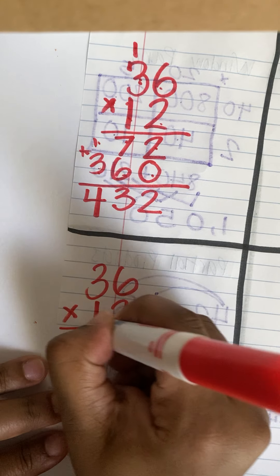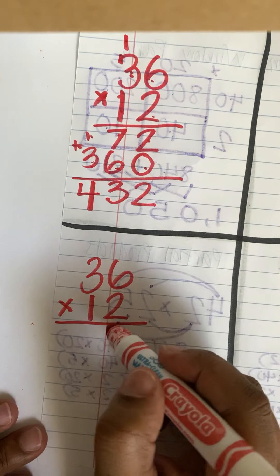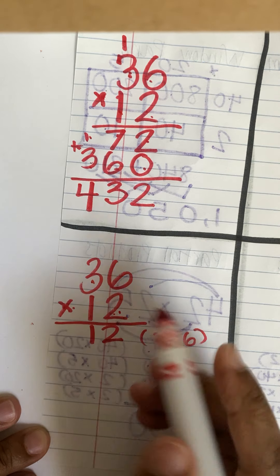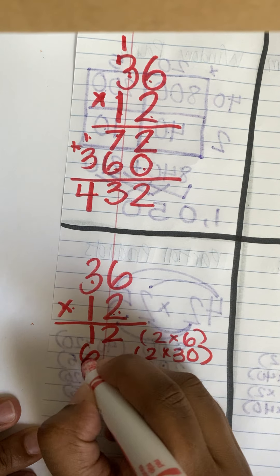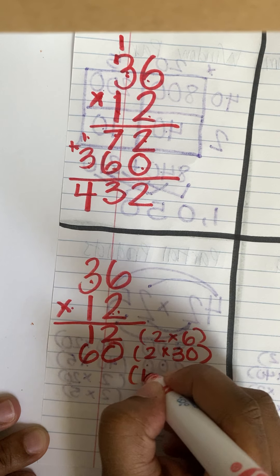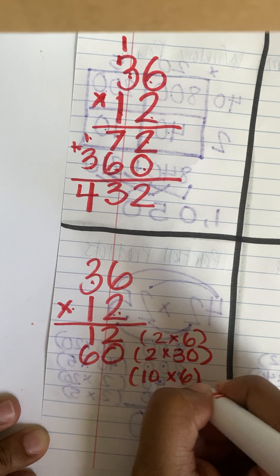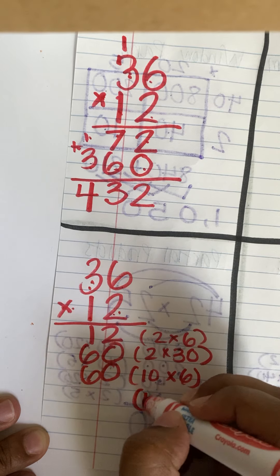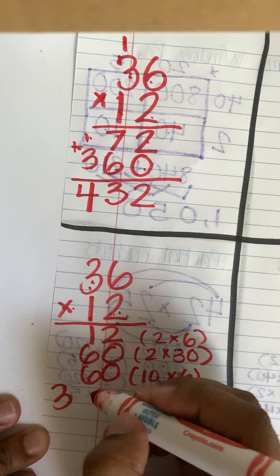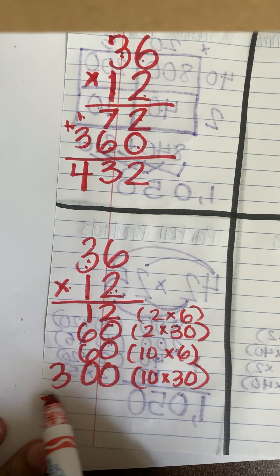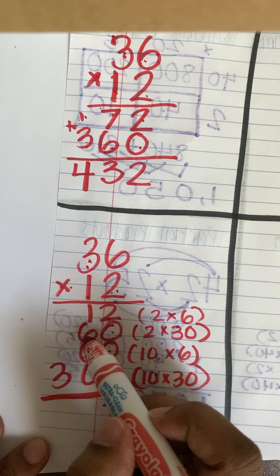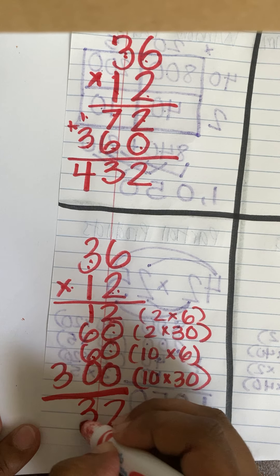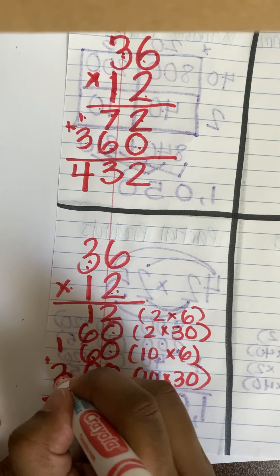I'm now going to go to my place value. I have 36 times 12. I know that 2 times 6 is 12, I know that 2 times 30 is 60, I know that 10 times 6 is 60, and I know that 10 times 30 is 300. I'm going to put all of that together: 2 plus 0 plus 0 plus 0 is 2, 60 plus 60 is 120 plus an additional 1 is 130, so 3 tens. I'm bringing my 100 over here — now I have 300 and 100, that's 432.